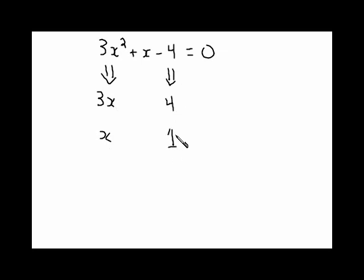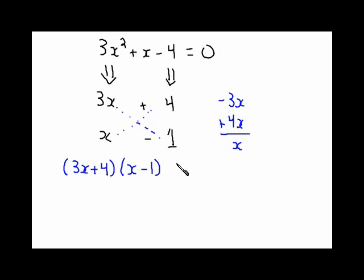So I'll try 4 and 1, with the positive 4 and the negative 1. I have a good feeling about this one. 3x times negative 1 is negative 3x. Then x times positive 4 is positive 4x. This gives me positive 1x. So I've got my answer. This one's going to factor into 3x plus 4 and x minus 1.